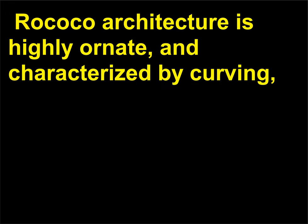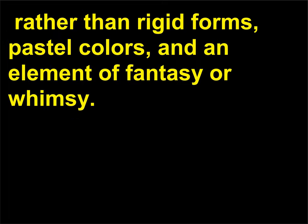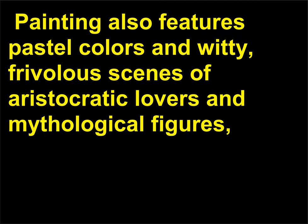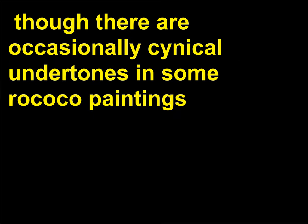Rococo architecture is highly ornate and characterized by curving rather than rigid forms, pastel colors, and an element of fantasy or whimsy. Rococo painting also features pastel colors and witty, frivolous scenes of aristocratic lovers and mythological figures, though there are occasionally cynical undertones in some Rococo paintings — for example, in the prints and paintings of William Hogarth.